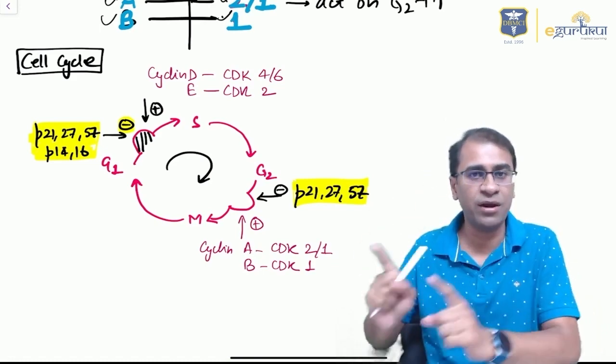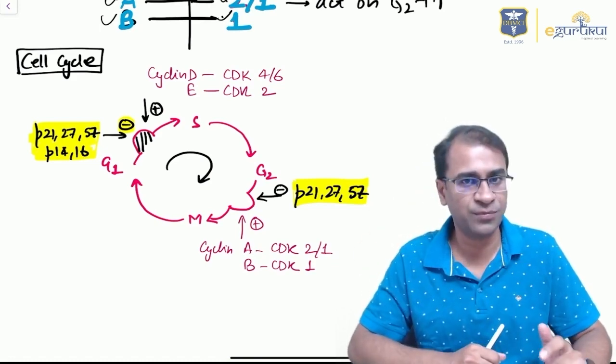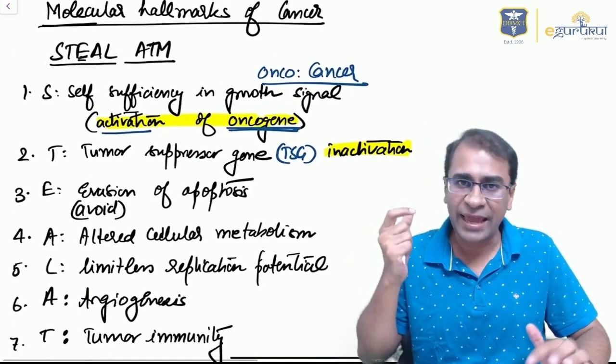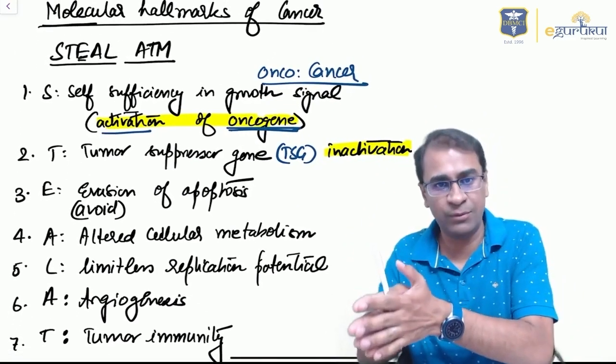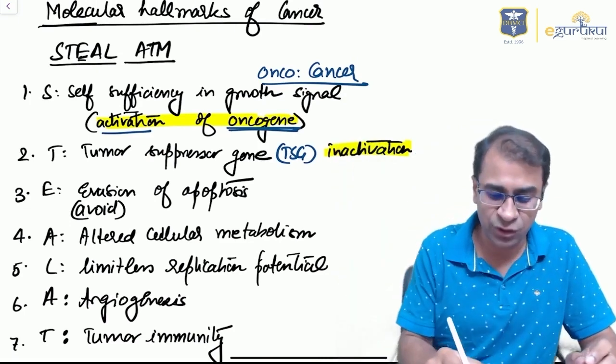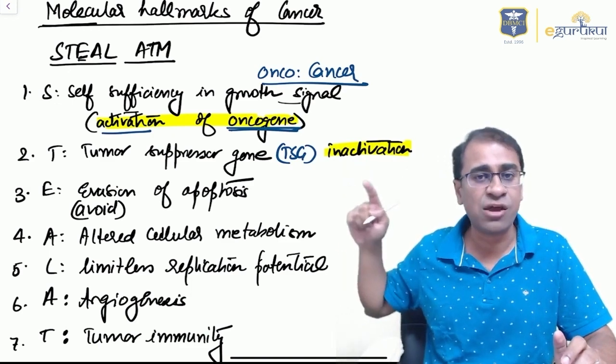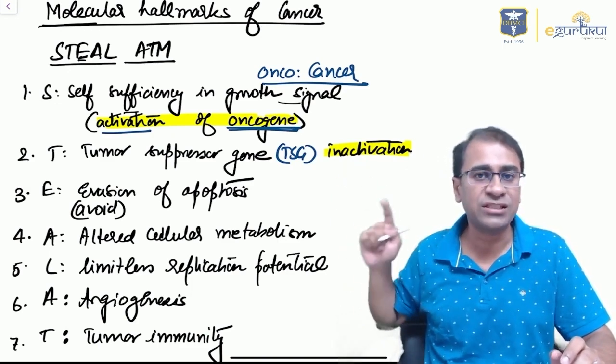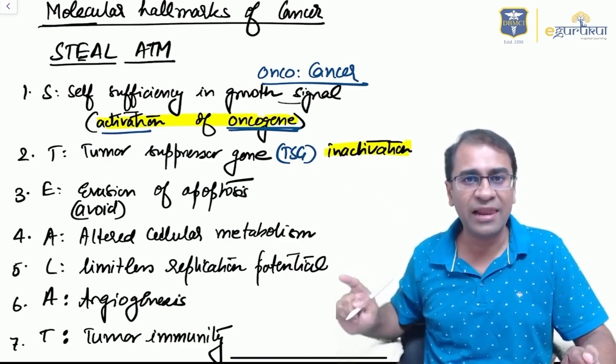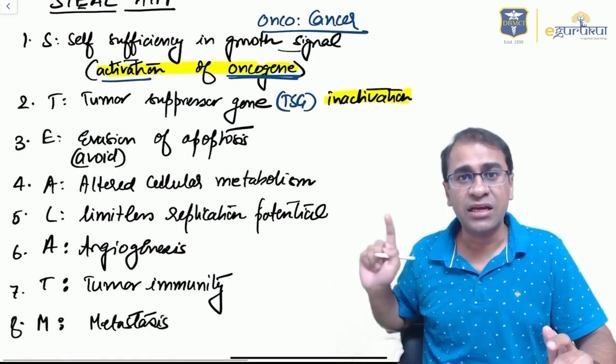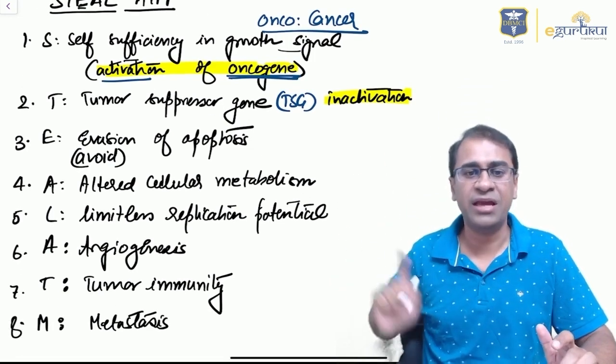This is very important to remember during exams. What are the hallmarks of cancer? A mnemonic: STEAL ATM. Cancer will have self-sufficient growth signal, also called oncogene activation; tumor suppressor gene inactivation; E is evasion of apoptosis; A is altered cell metabolism; L is limitless replication potential; A is angiogenesis; T is tumor immunity; and M means metastasis.